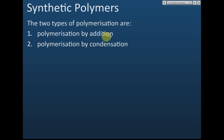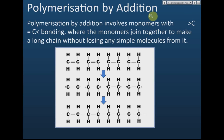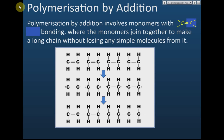Let's see how polymerizations by additions occur. Polymerizations by additions involve monomers with a carbon-carbon double bond, where the monomers join together to make a long chain without losing any simple molecules from it.